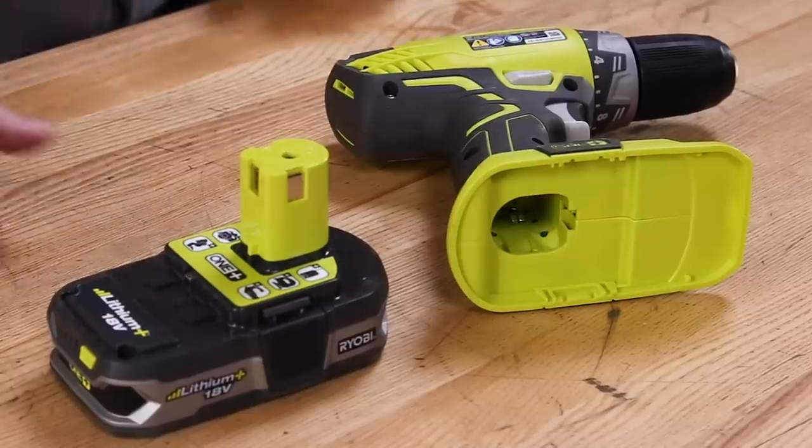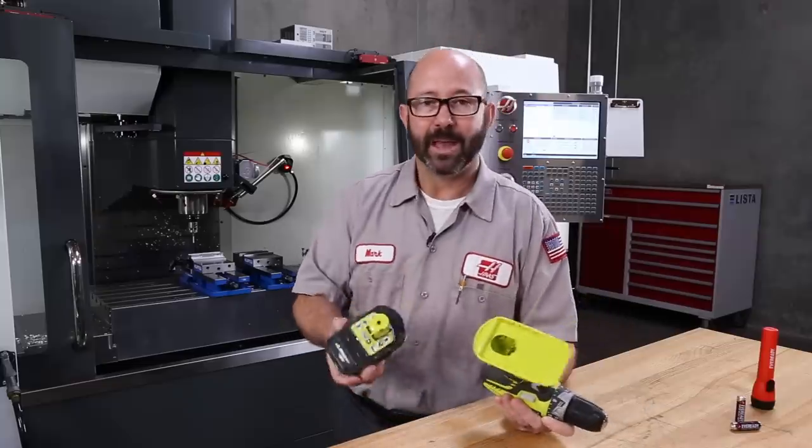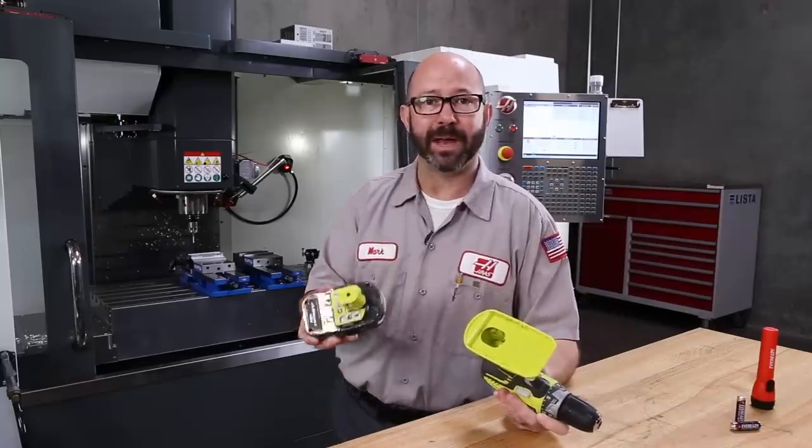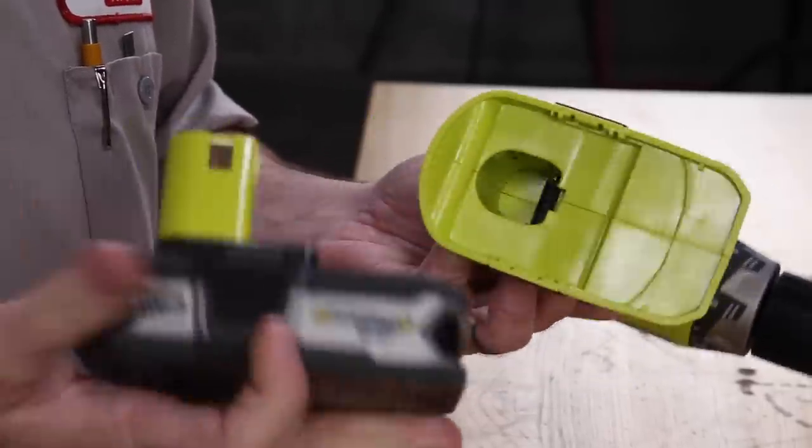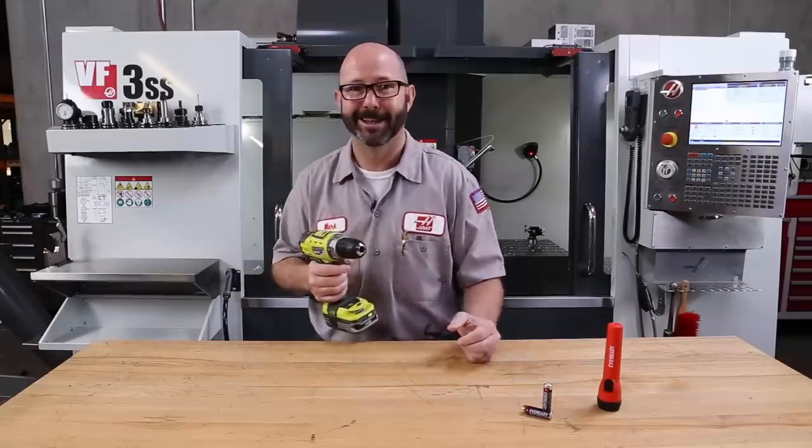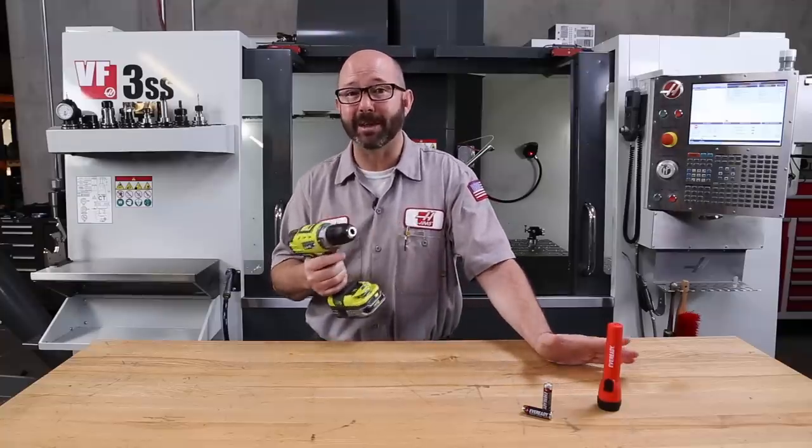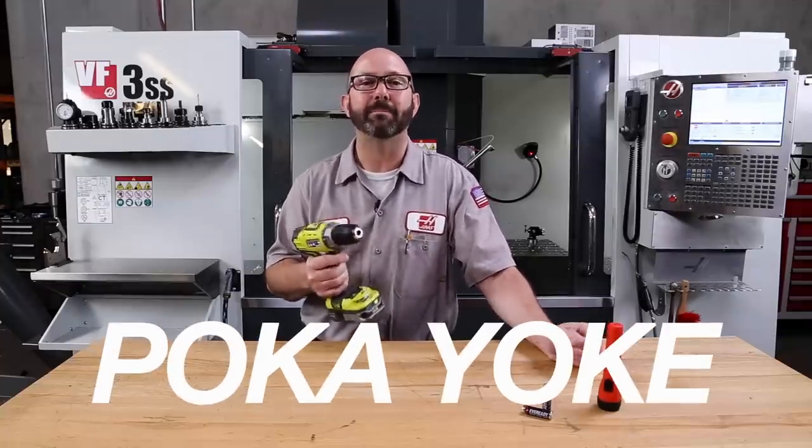In fact even with a cordless drill they have made it impossible for you to put the battery in backwards. You just can't physically do it.